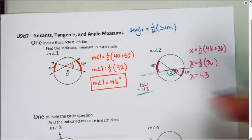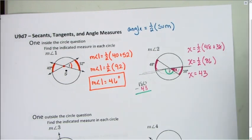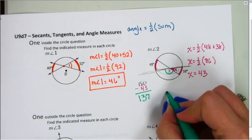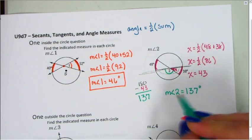So when I take away 180 minus 43, that's going to leave me with 137 degrees. So the measure of angle 2 will equal 137 degrees.